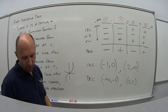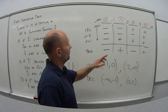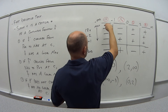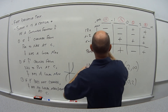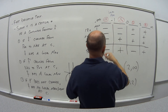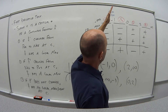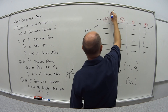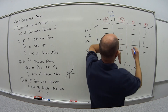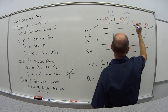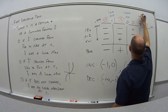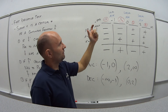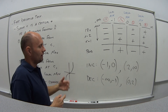Going back to our example, the critical points were negative 1, zero, and 2. From our table, the derivative went from negative to positive at negative 1, so negative 1 is a local minimum. It changed from positive to negative at zero, so zero is a local maximum. Then it changed from negative to positive at 2, so 2 is also a local minimum. At our critical points the function alternates from local max to min to max to min, unless the sign doesn't change — in which case it's a point of inflection.